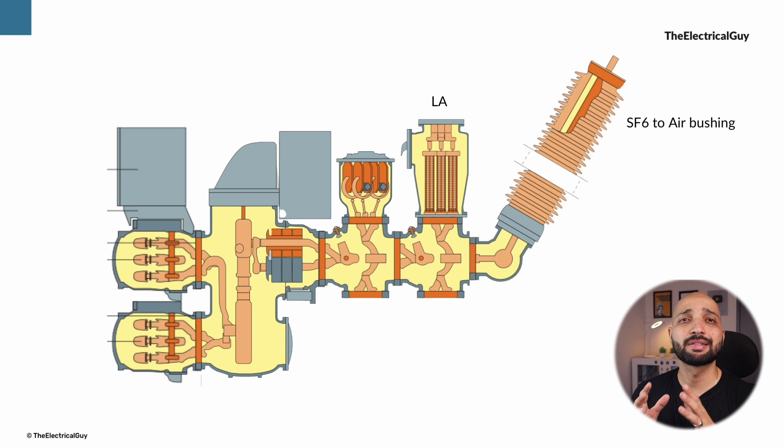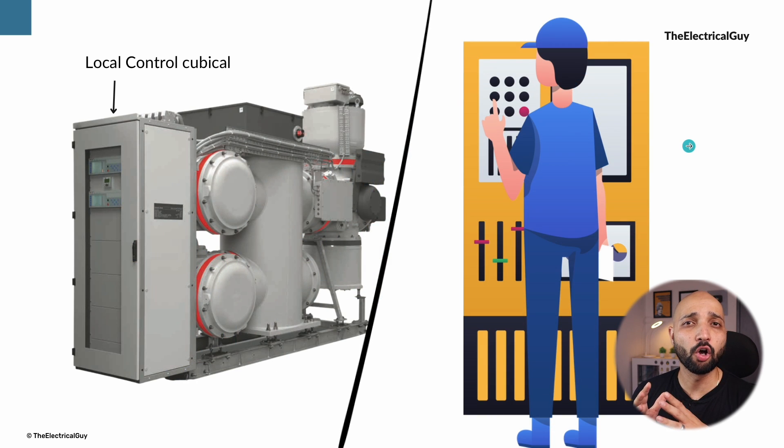One more component of GIS is a local control cubicle or LCC. This local control cubicle provides a facility to operate circuit breaker or disconnector locally. It also shows the single line diagram and the position of switching devices like disconnector is closed or open, that information operator can get from LCC as well.